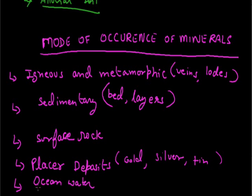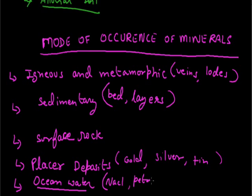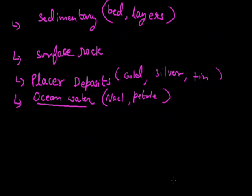The last source is ocean water. Ocean water contains vast quantities of minerals, for example common salt (NaCl), magnesium, bromine, and petroleum. Here in India, we have Bombay High, from where India gets more than 40% of its petroleum consumption. So minerals are basically found in these reserves. In our next part of the lecture, we will take examples of ferrous, non-ferrous, and non-metallic minerals. That's all for today. Thank you.